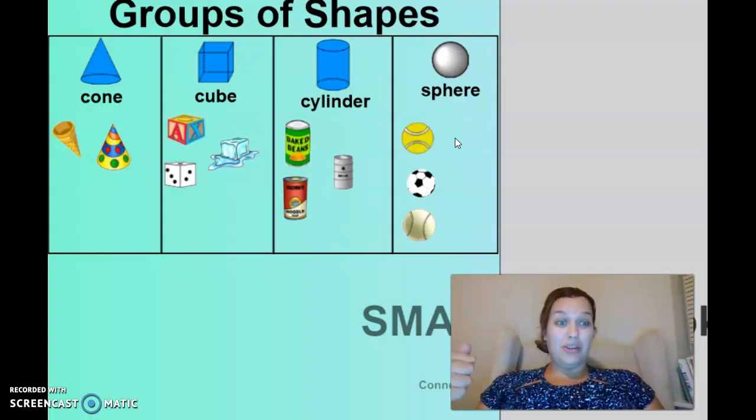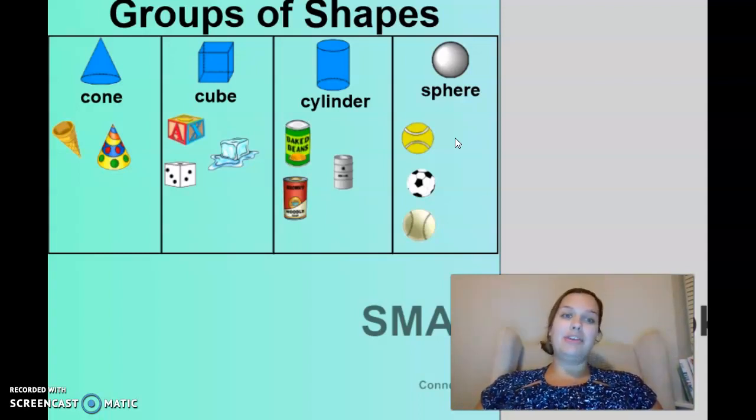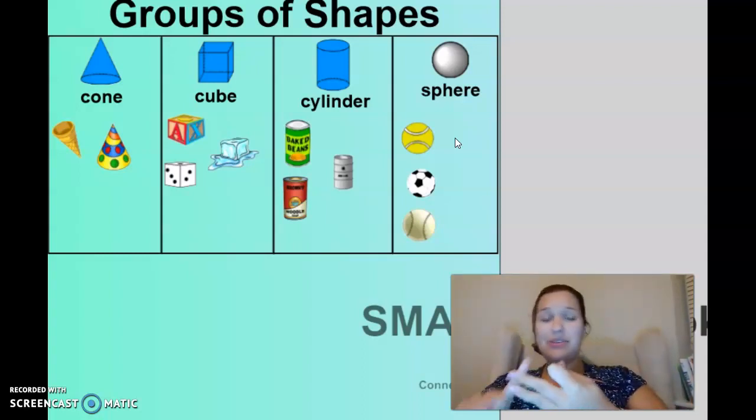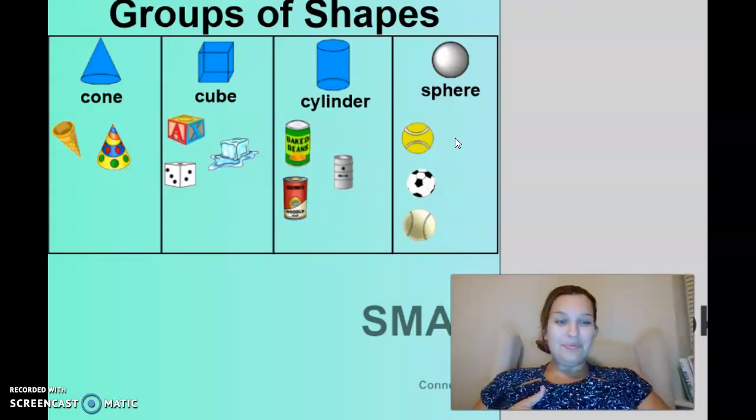So your goal today... There is a Google form for an exit ticket. But the last question on your Google form will say, Take a picture of what you found, what 3D shapes you found around the house. And I want you to show me every 3D shape you found around the house. I want to see the cones, the cubes, the cylinders, and the spheres.